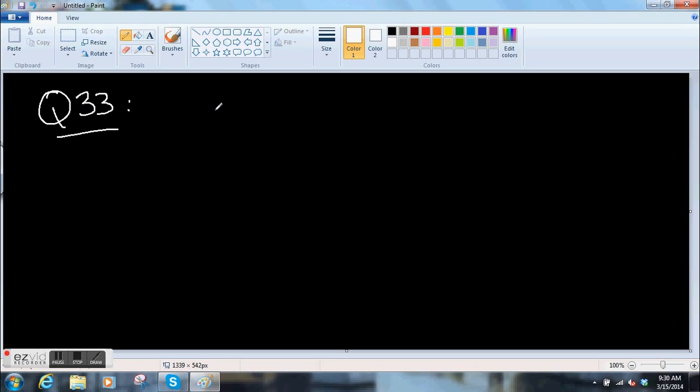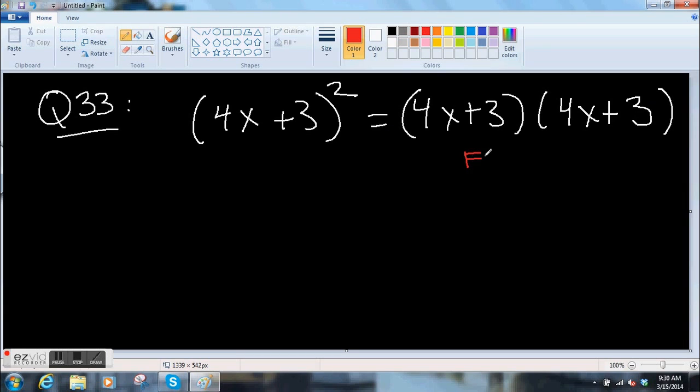Here is another one. Question number 33. This is a FOIL method problem. So we have 4x plus 3, and we want this whole thing squared. So what they're saying here, well, that's 4x plus 3 times 4x plus 3. Now we're going to use the FOIL method. First, outer, inner, last. And that's the order that most people do these.